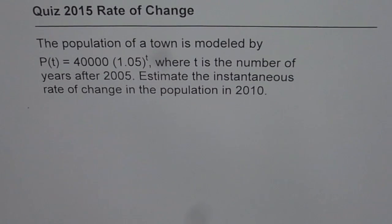The question here is: the population of a town is modeled by P(t) = 40,000 times 1.05 to the power of t, where t is the number of years after 2005. Estimate the instantaneous rate of change in the population in 2010.